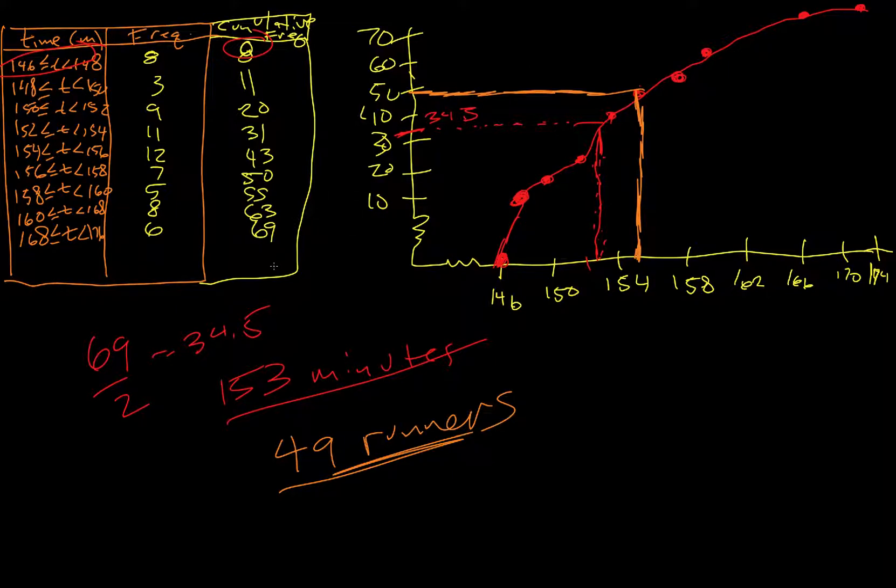Now part three on C: percentage of competitors who took more than 159 minutes to finish. So 159, it's going to be like right here. I'm going to go up to there. I would call that 58 runners, but we want the percentage. So we're going to say 58 divided by 69.